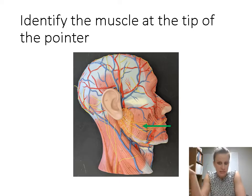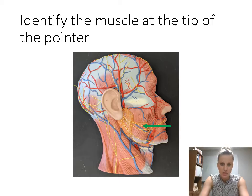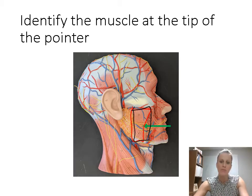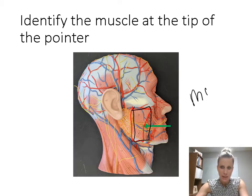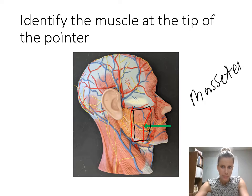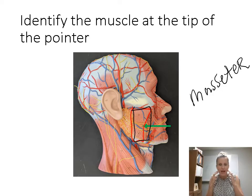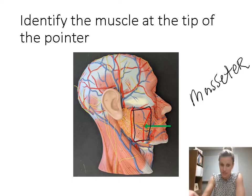Identify the muscle at the tip of the pointer. This is pointing to a rectangular, strap-like muscle — that muscle is the masseter. It's the muscle we use for mastication, or chewing. When you clench your jaw, you can feel it on the side of your cheeks. So that's the masseter.